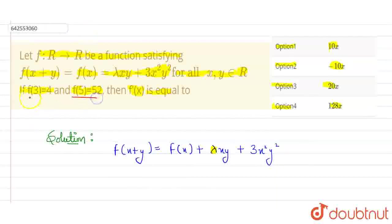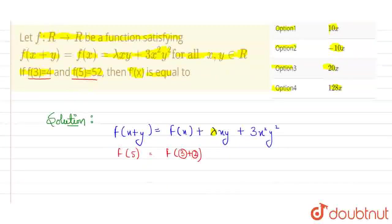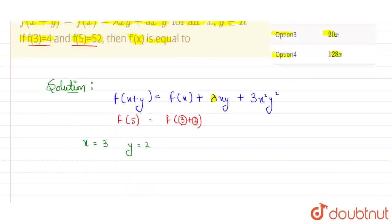Using these two information given to us in the equation, that f of 5 is equal to 52. So how I can get f of 5 in LHS? If I'll use f of 3 plus 2, if I'll use 3 in place of x and 2 in place of y, then I can get f of 5. So let's use this. I'm considering x is equal to 3 and y is equal to 2 in the given function. Now, f of 3 plus 2...